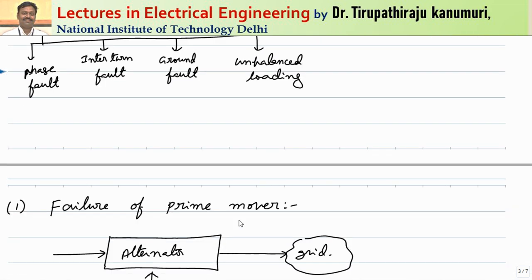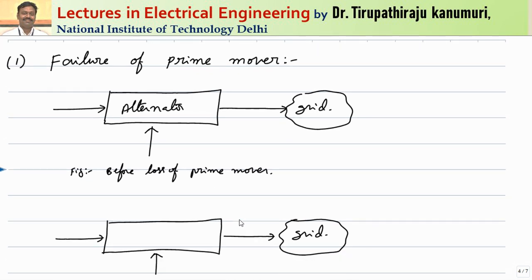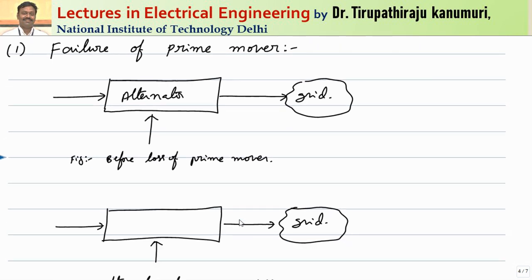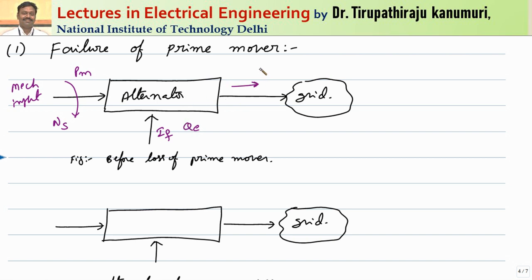Unbalanced loading means the load on the alternator is not balanced — different phases are loaded differently. Starting with failure of the prime mover: the mechanical input is given to the prime mover, and that mechanical energy rotates the alternator at speed NS. The field current supplies the field energy and reactive power. The alternator supplies both active power PE and reactive power JQE to the grid, where S equals PE plus JQE.